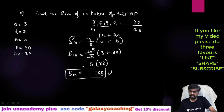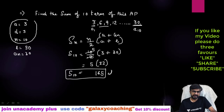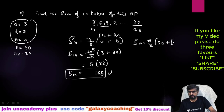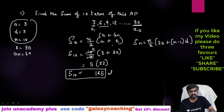If you want to solve this by the direct method — Sn = n/2 × (2a + (n−1)d) — you can solve it that way also and you will get the same answer, but here we had a shortcut available so we used it. It is not necessary that every time you can use the shortcut.